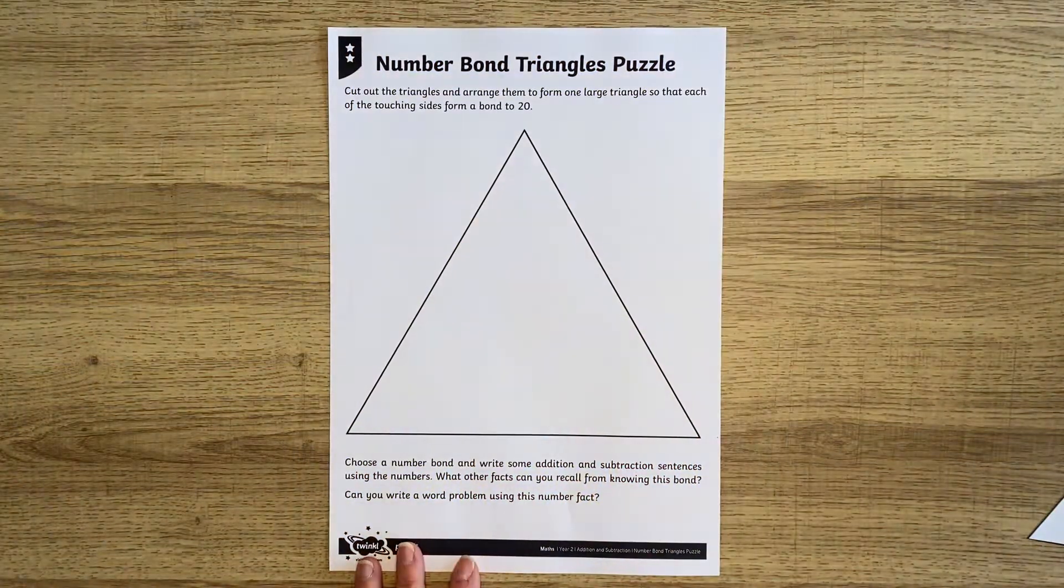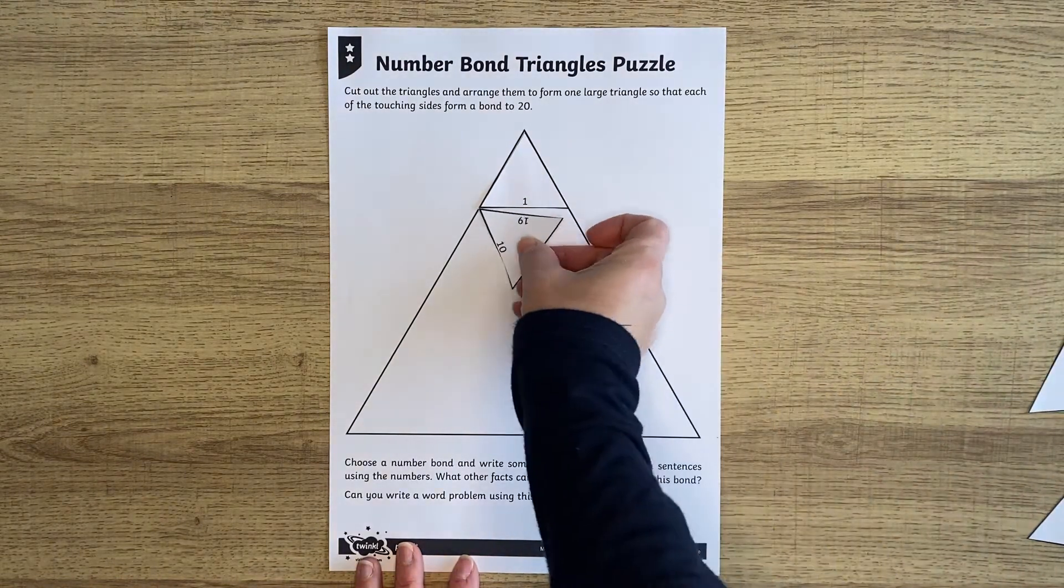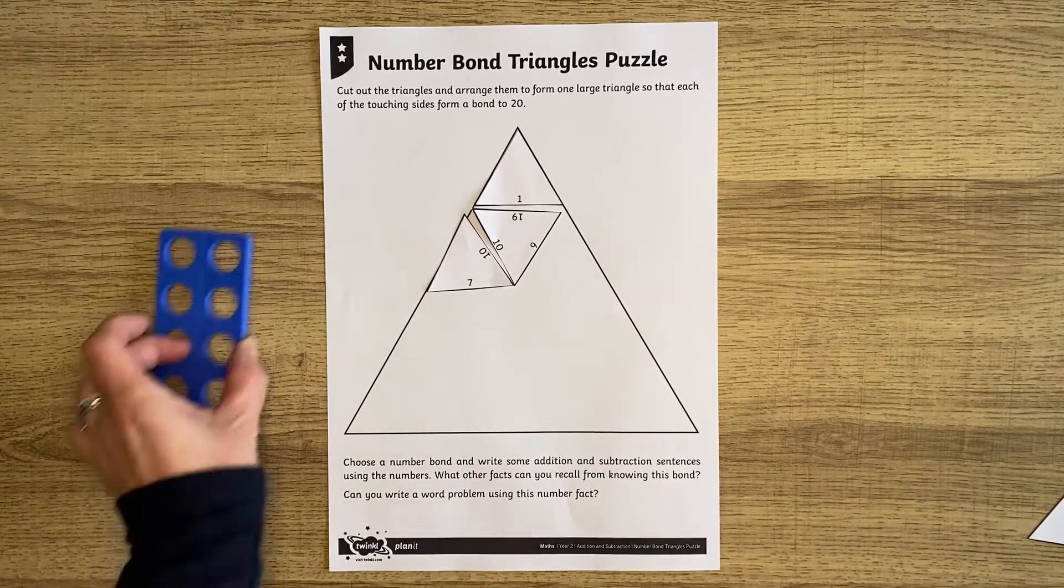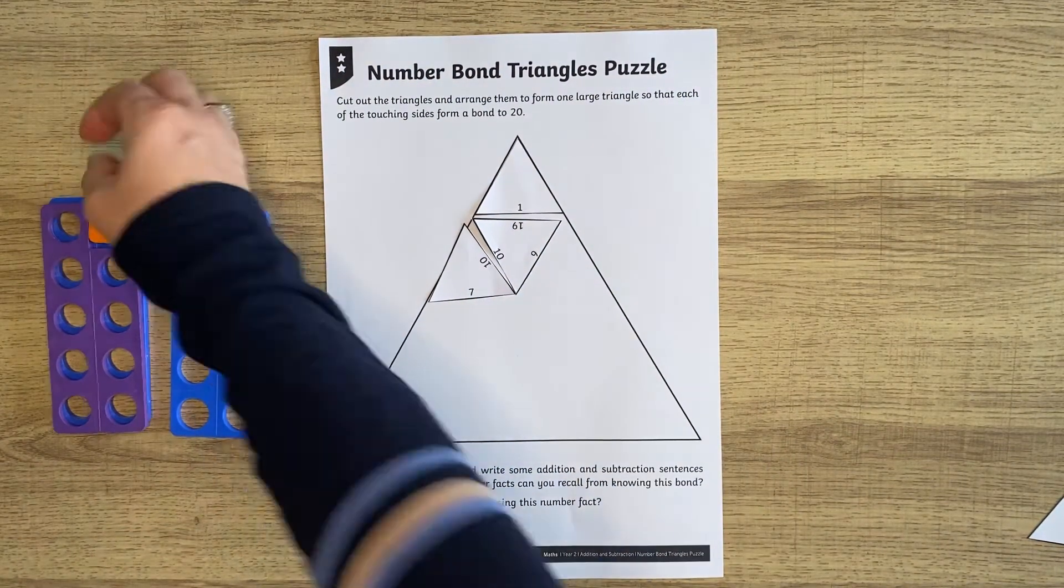We also have puzzles that will help with number bonds. The little triangles will be arranged to form one large triangle so that each of the touching sides form a bond to 20. If anybody is finding it tricky, why not use some number shapes to help?